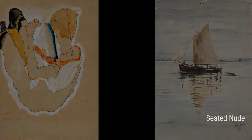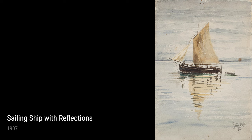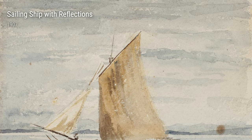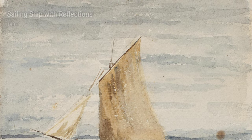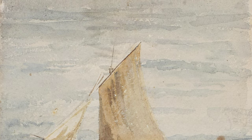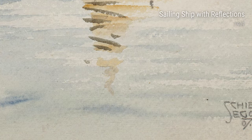Now let's explore some of Schiele's later works. In the portrait A Woman, created between 1907 and 1908, we see his progression toward a more expressive style. The use of vibrant colors and distorted forms showcases his increasingly introspective and emotional approach to his art.